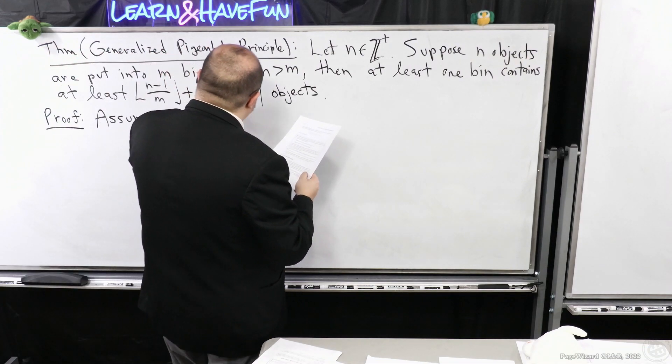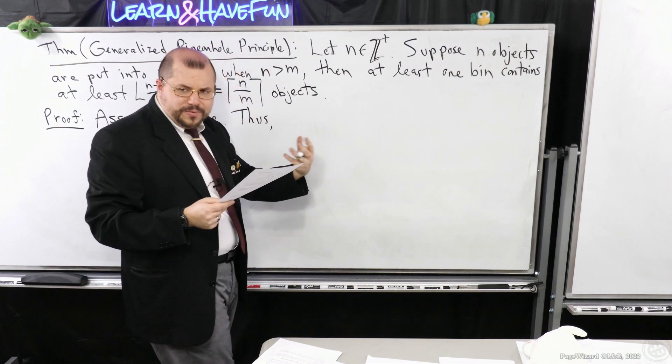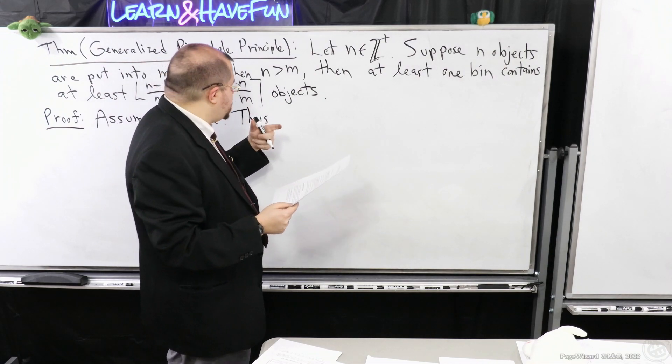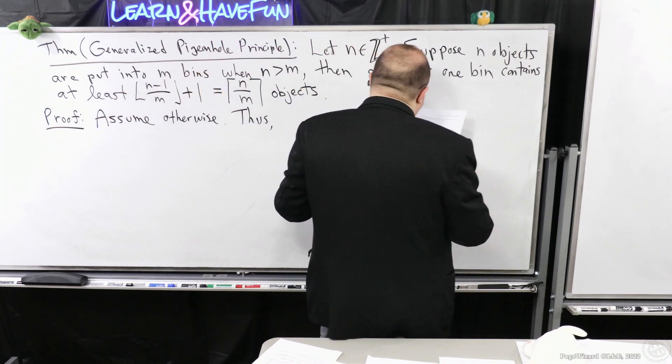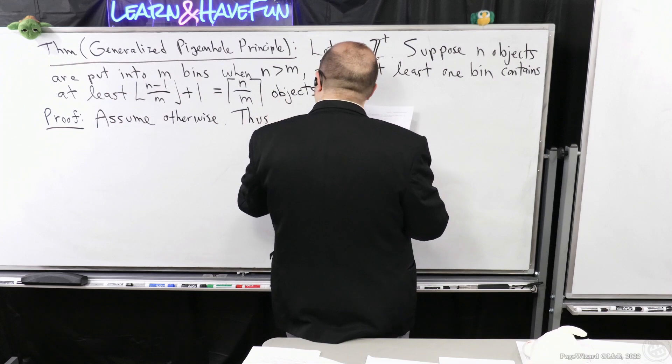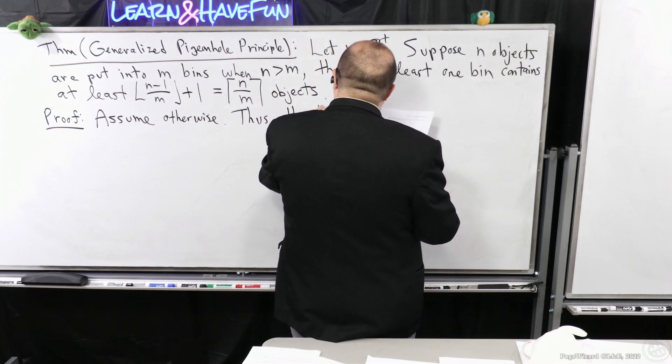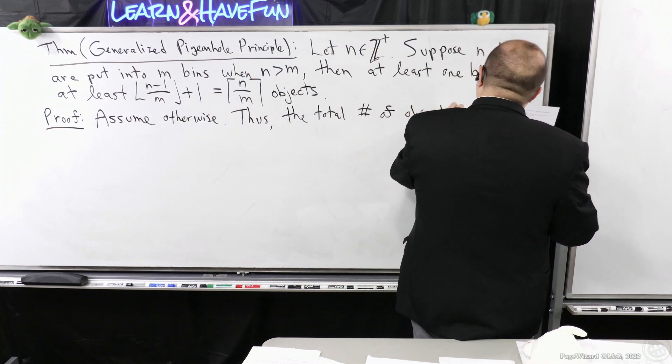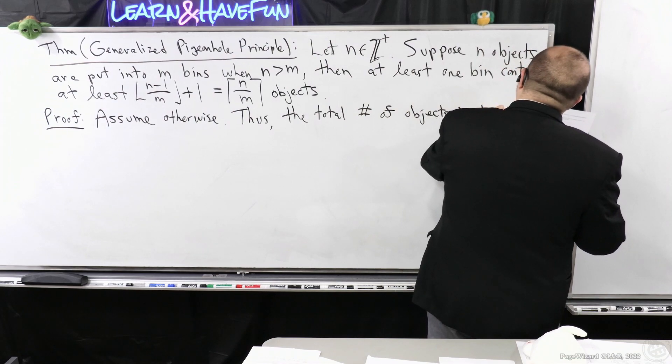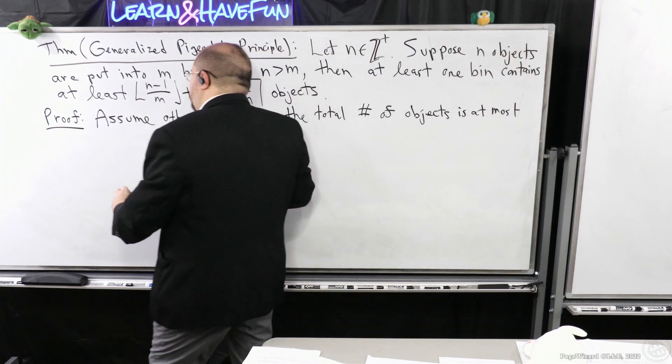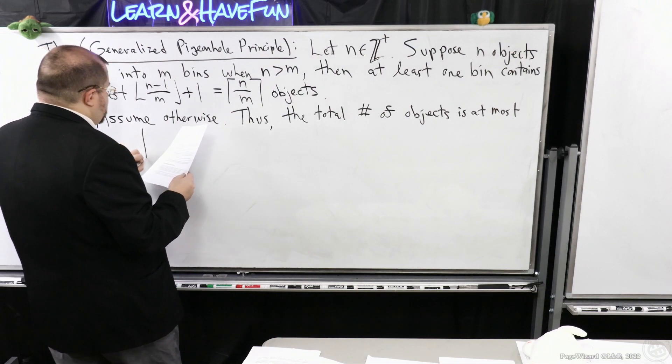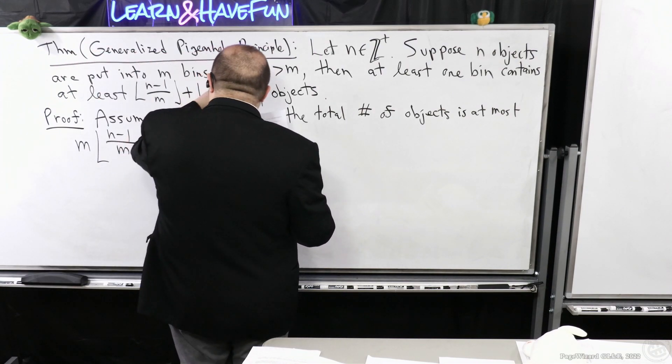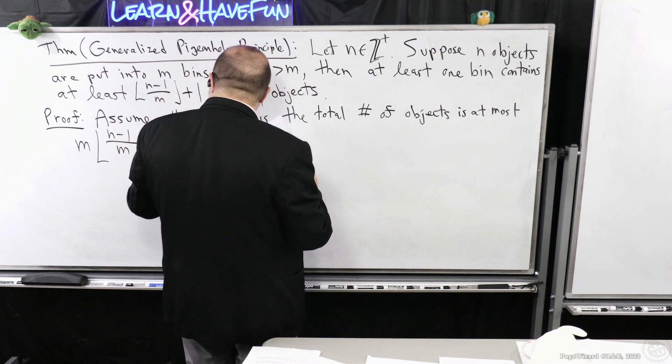Thus, similar to the way we also argued this for the pigeonhole principle originally, we had at most one per bin. Now we're going to have at most this minus one per bin. That means the total number of objects is at most, well for each bin you're going to have floor of n minus one over m like this. Remember it's just one less, because if you did then it would satisfy this condition.